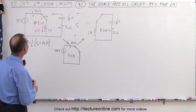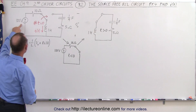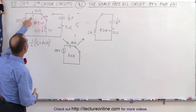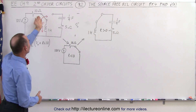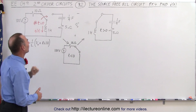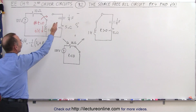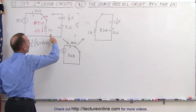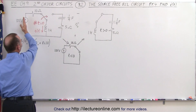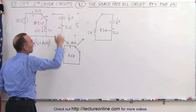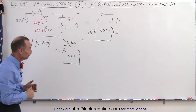Here's our second circuit. We have a 100 volt source, a 10 ohm resistor, and a switch that goes from this position to that position. As soon as it switches over, we separate this portion of the circuit from the source, and we'll have a source-free RCL circuit.